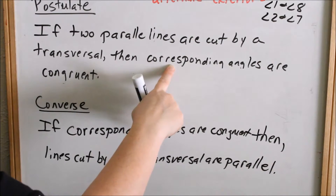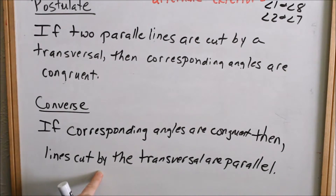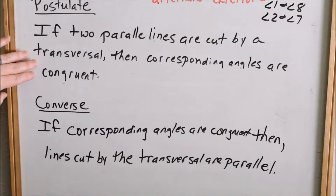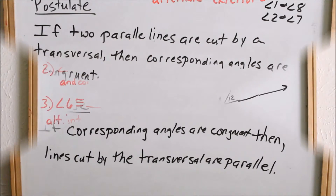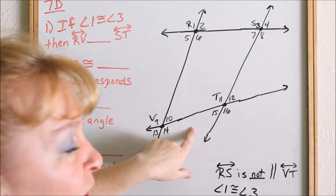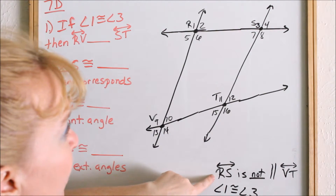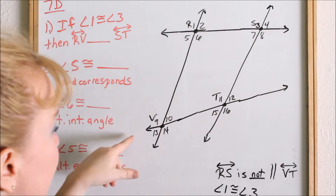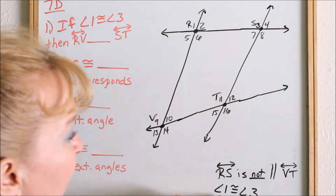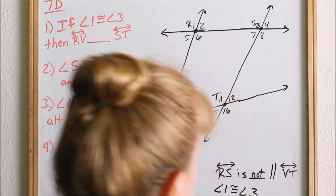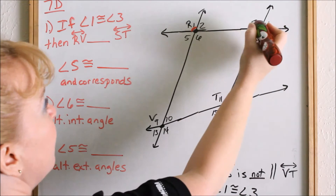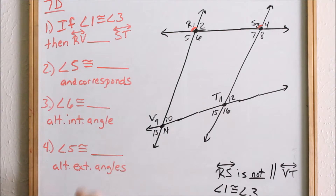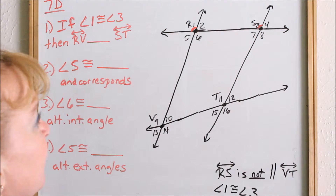In the first statement we were proving that angles were corresponding and congruent. In the converse, we are told we have corresponding angles that are congruent, and we can prove that those lines are parallel. So for now we're just going to be practicing saying the converse — all you're doing is saying the last part first and the first part last. We're going to be looking at problems on 7D. Here's the figure — look at the givens. The given says RS is not parallel to VT, and angle 1 is congruent to angle 3. I recommend you mark them in your picture using little arcs as the congruent symbol.